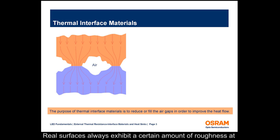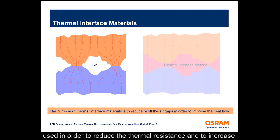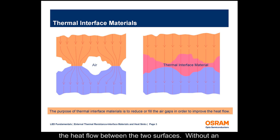Real surfaces always exhibit a certain amount of roughness at the micro level and are never perfectly smooth. Physical contact between two surfaces only occurs at isolated points, with air pockets in between these points. Since air is a poor conductor of heat, a more conductive material can be used to reduce the thermal resistance and increase the heat flow between the two surfaces.